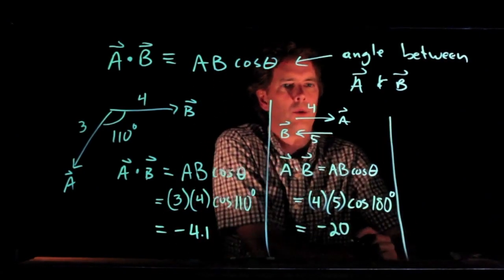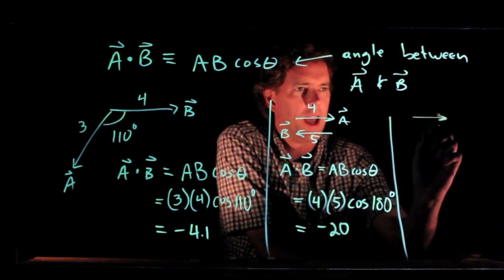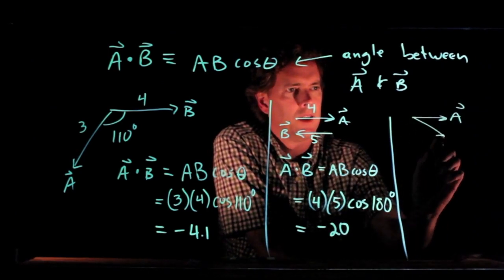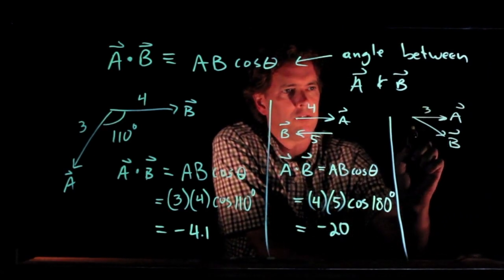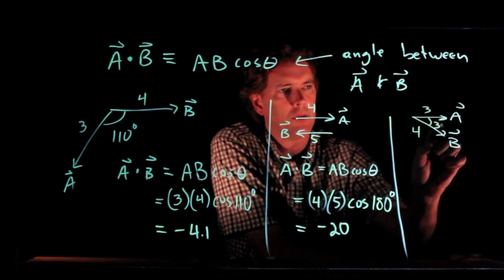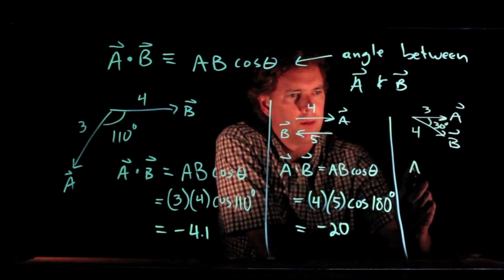Let's try one more relatively simple example. Let's say we have A pointing to the right and B pointing down. And let's say that A is 3, B is 4, and let's say that angle between them is 30 degrees. All right, no problem.